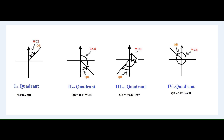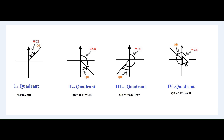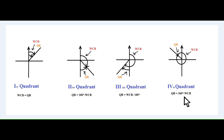In the 3rd quadrant, the whole circle bearing is measured from magnetic north in clockwise direction towards the line, and the quadrantal bearing is measured from the magnetic south because the line is more nearer to the south. Hence, we can convert the whole circle bearing into quadrantal bearing by: quadrantal bearing equals whole circle bearing minus 180 degrees. In case of the 4th quadrant, the angle for whole circle bearing is measured from magnetic north towards the line. In quadrantal bearing, the angle is measured from the magnetic north in anti-clockwise direction. Hence, the quadrantal bearing equals 360 degrees minus the whole circle bearing if the line is in the 4th quadrant.